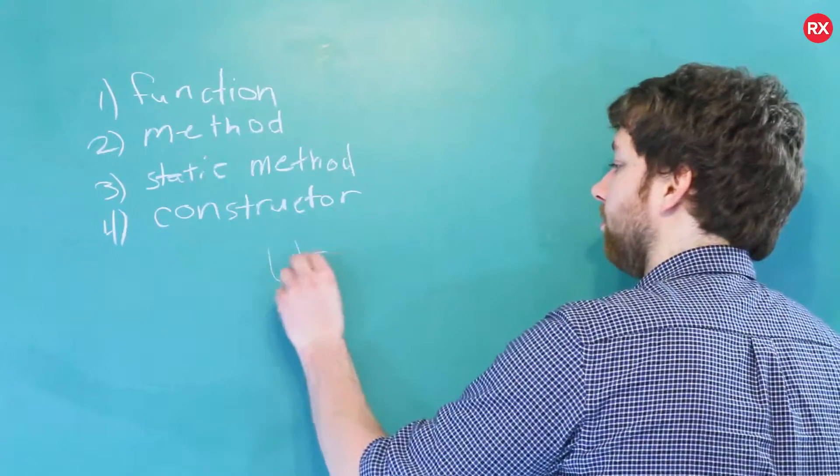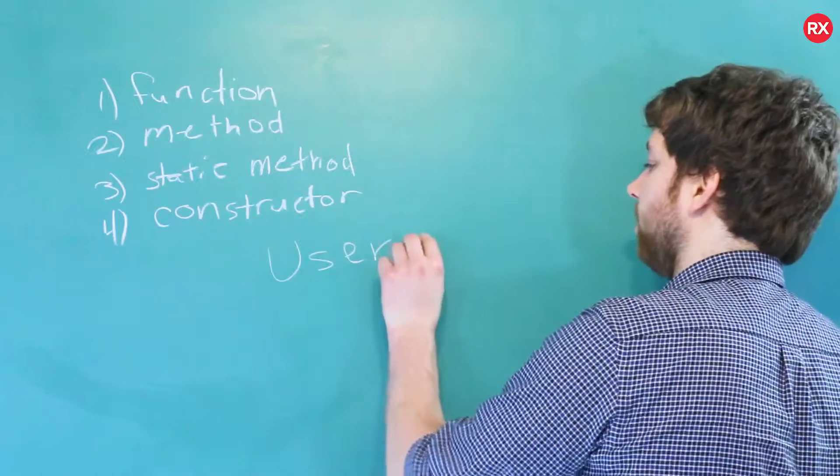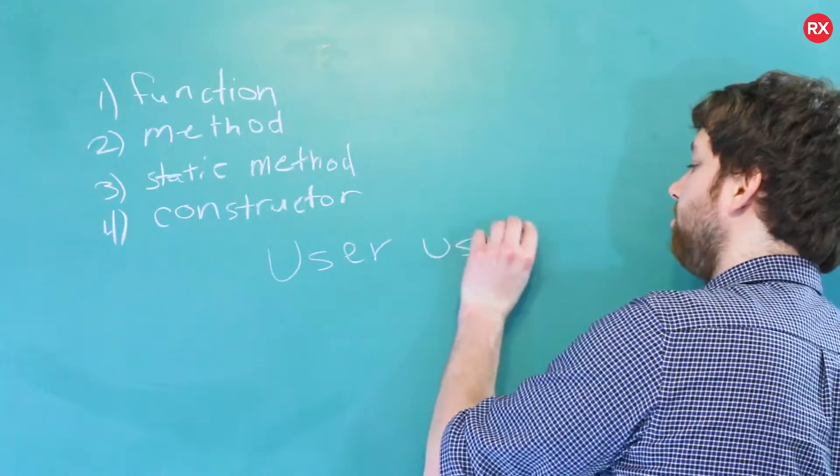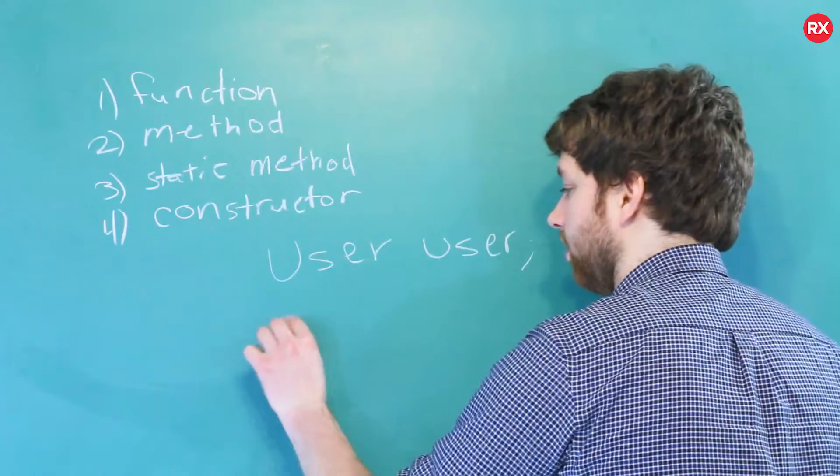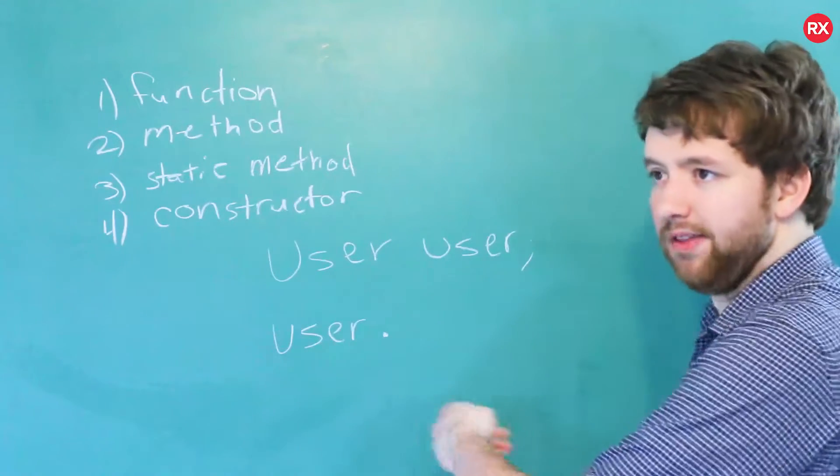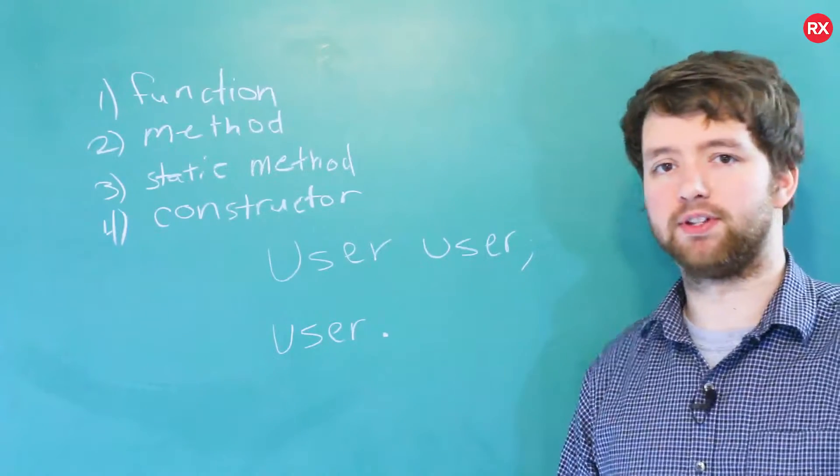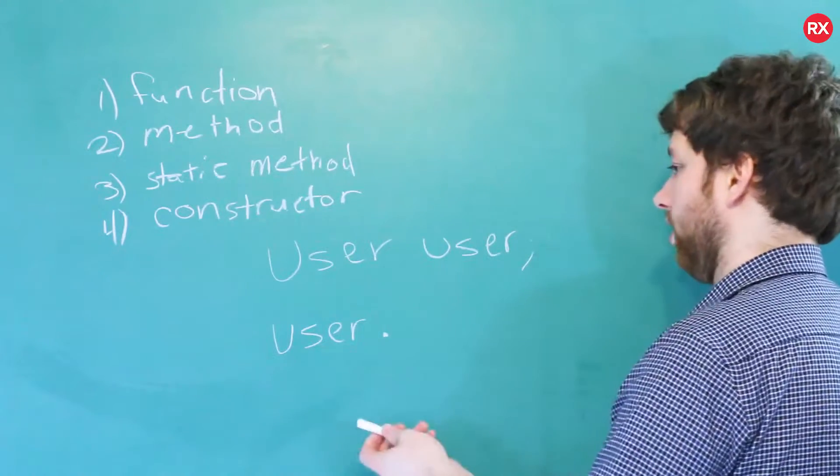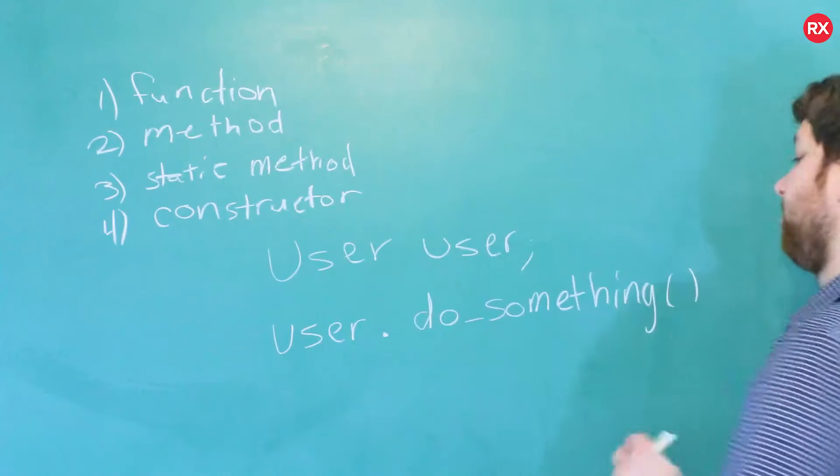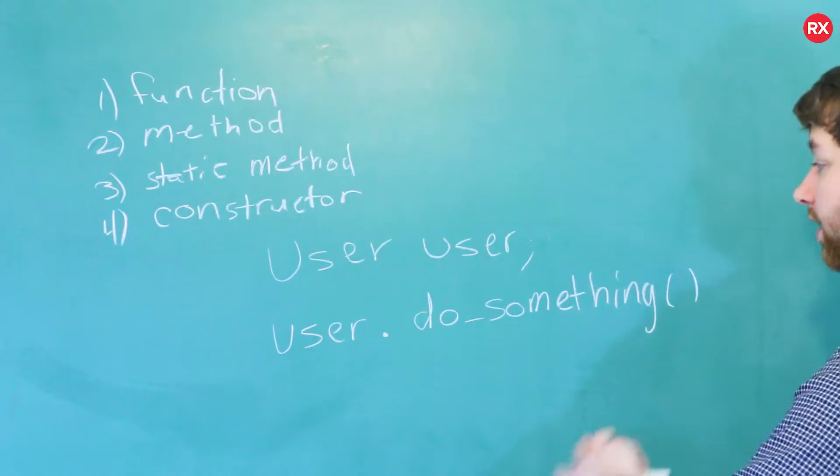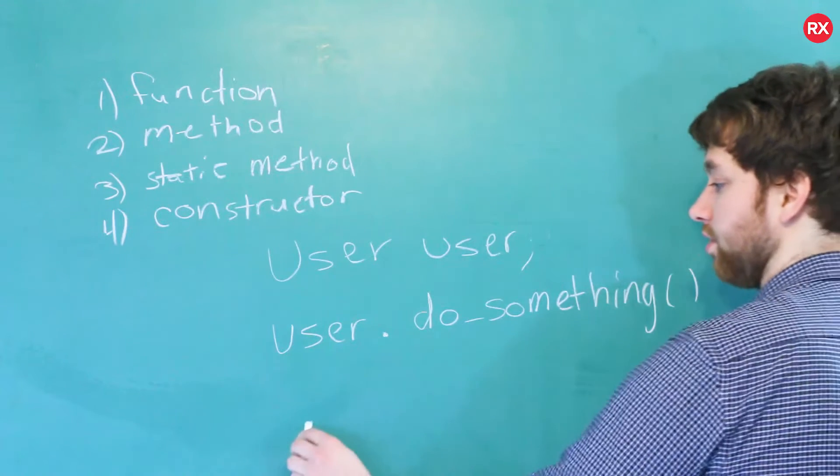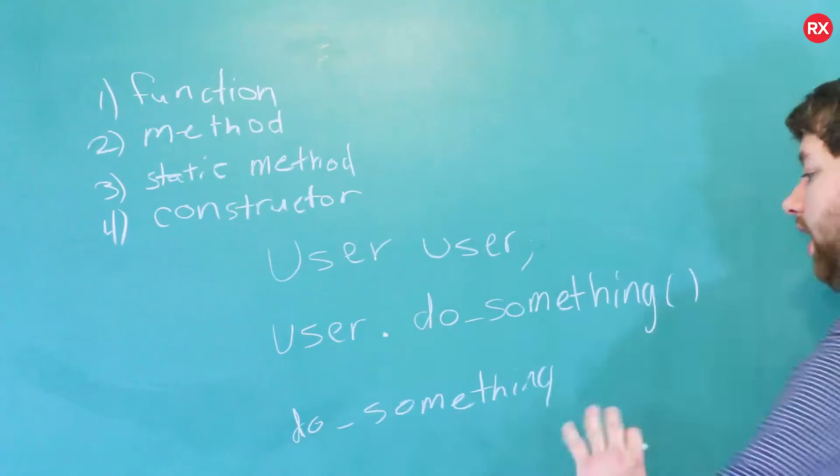The only difference on how you use them is the way you call them. So for example, when we talk about object-oriented programming, we are going to create a user. And when you create a user, it's going to look something like that. And then you might say something like user dot, and then you put the function name. Something very descriptive, such as this here. This is a method. If we had that function by itself, we would just call it like this.